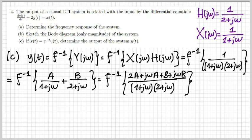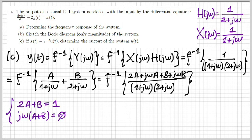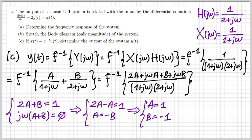To determine A and B, we need the numerator to equal 1. The term in ω must vanish: j·ω·(A + B) = 0, so A + B = 0. The constant term must equal 1: 2A + B = 1. Solving this system: from the first equation A = −B; substituting gives 2A − A = 1, so A = 1 and B = −1. We replace these values for A and B.